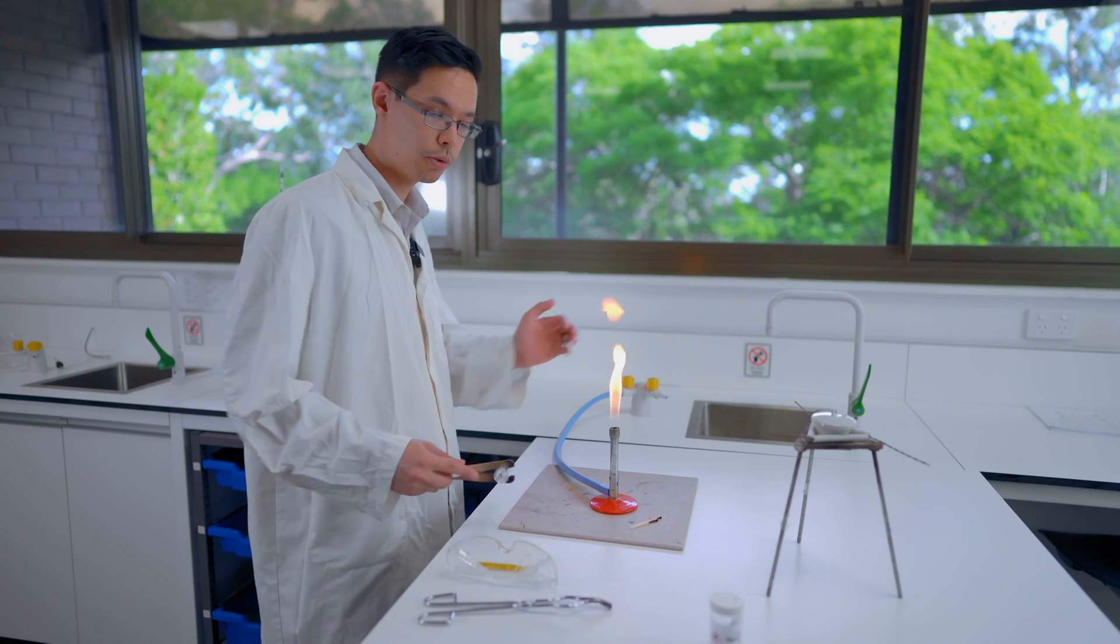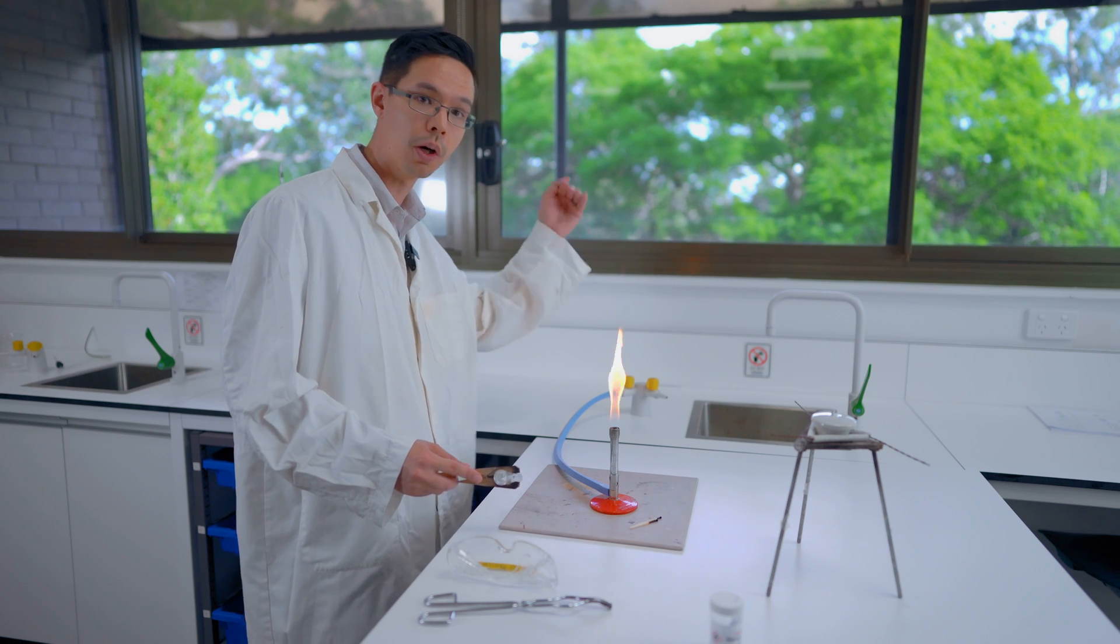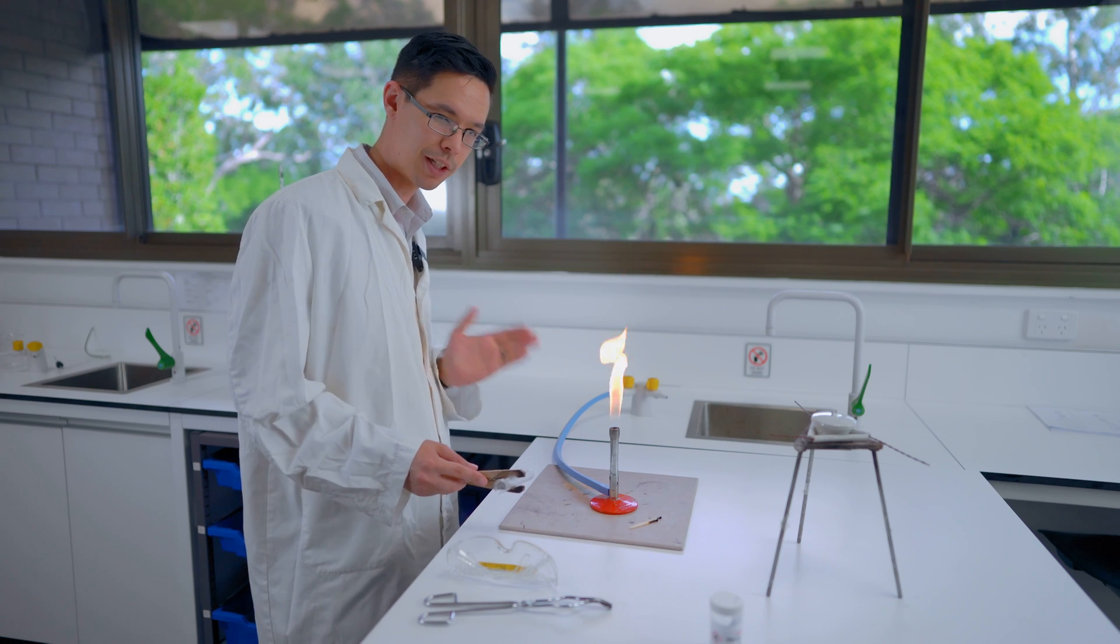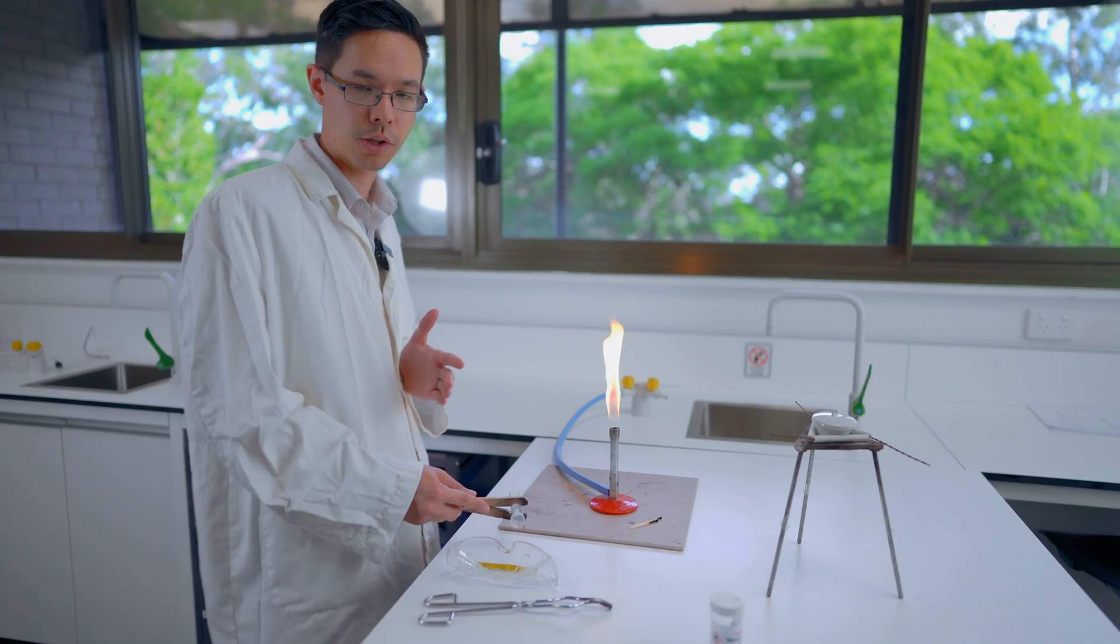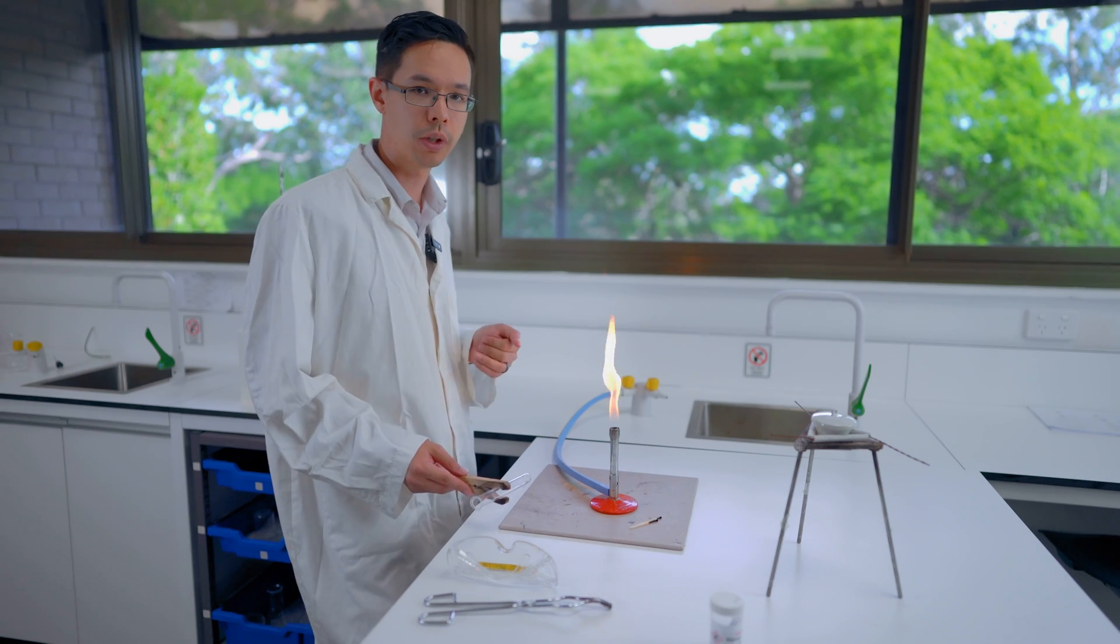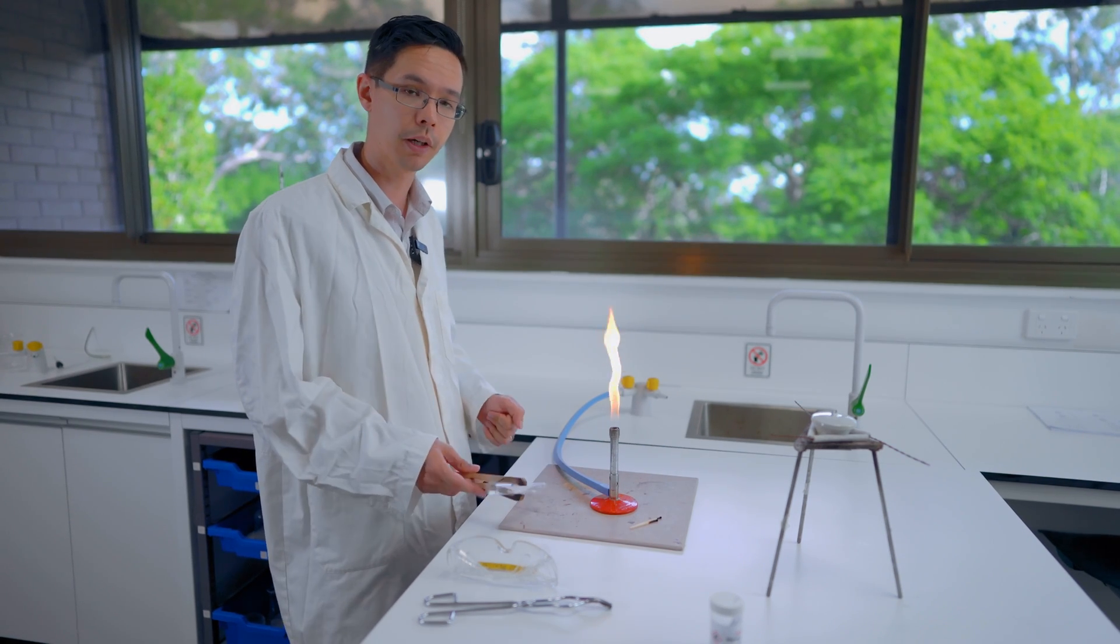So when you fully combust, you'll get carbon dioxide, the fuel oxide, and you'll have something in between where you have carbon monoxide. And you can have just ordinary soot, which in this case will be carbon.